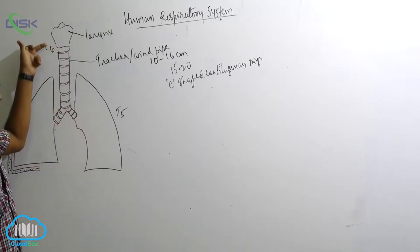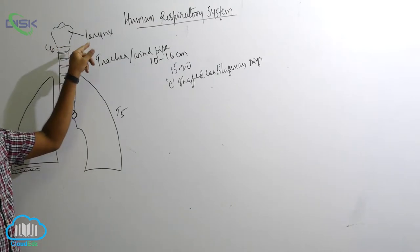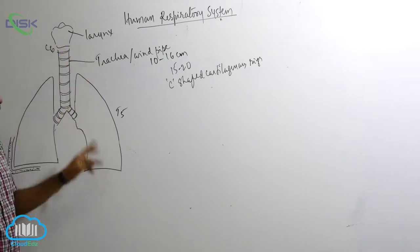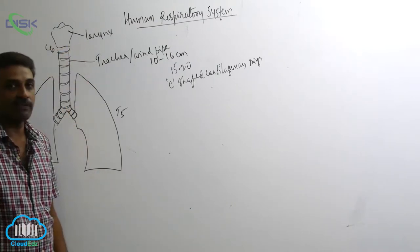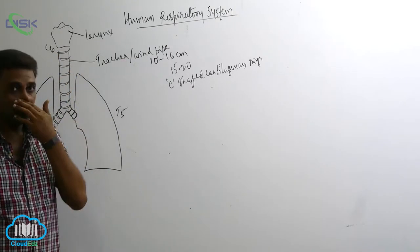The trachea extends from C6 up to T5, 6th cervical vertebra up to 5th thoracic vertebra. Now the trachea is also called windpipe.